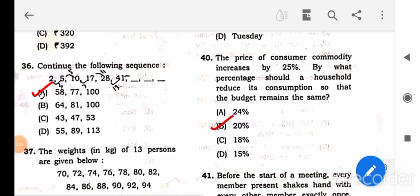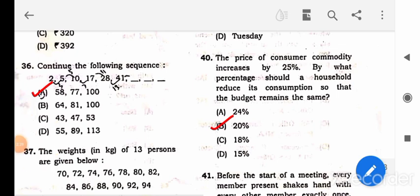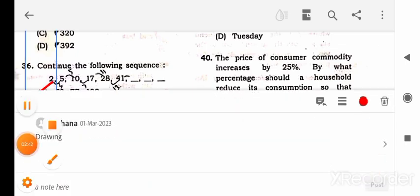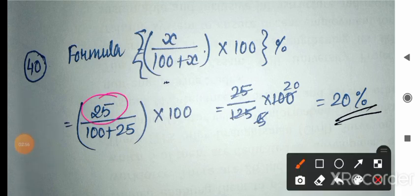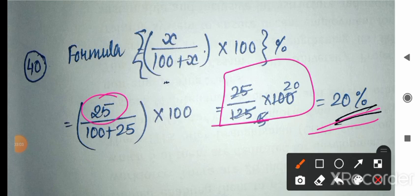Question 40: The price of a consumer commodity increases by 25%. By what percentage should a household reduce its consumption so that the budget remains the same? The formula is: x divided by (100 + x), multiplied by 100. Put x = 25: 25 divided by 125, multiplied by 100 = 20. So the answer is 20%.